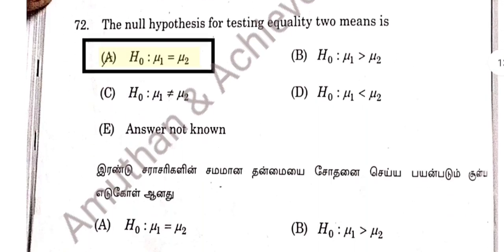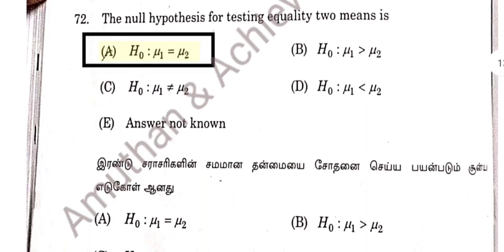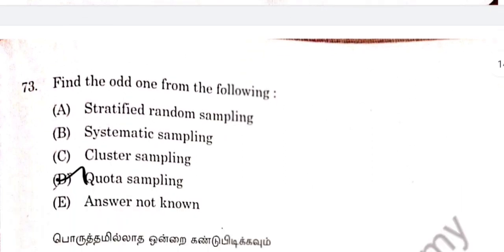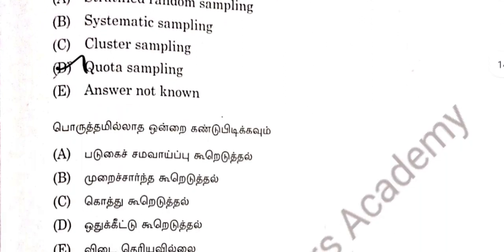Question 72: The null hypothesis H0 is mu1 equal to mu2. Question 73: Option D — Quota sampling.